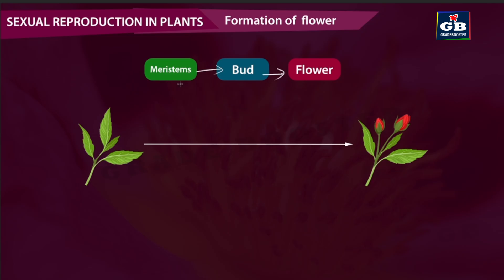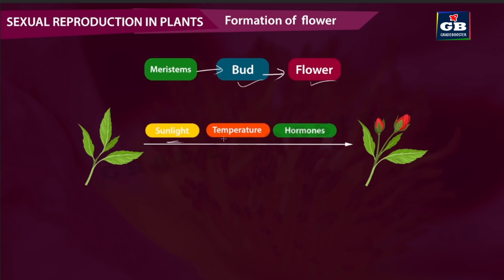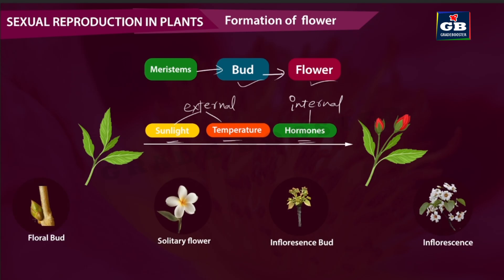But which factors trigger these changes — change of meristem to bud and bud to flower? There are three factors: sunlight, temperature, and hormones. Sunlight and temperature are external factors, whereas hormones are an internal factor. These factors are responsible for the formation of the floral bud and from there to flower. If the stem has a single floral bud, it grows into a single flower — a solitary flower.